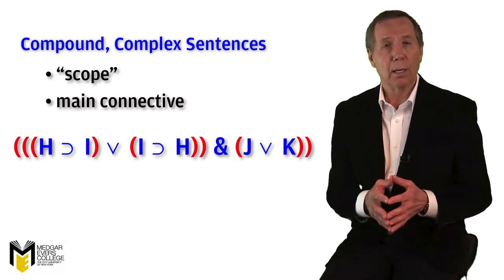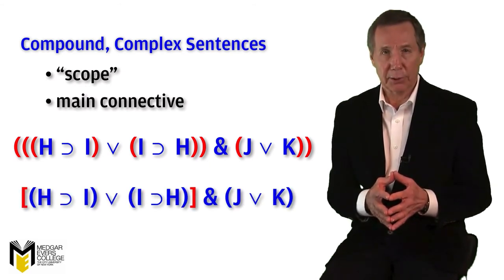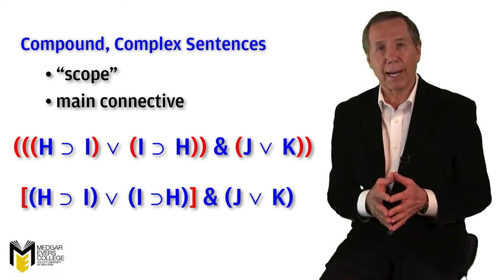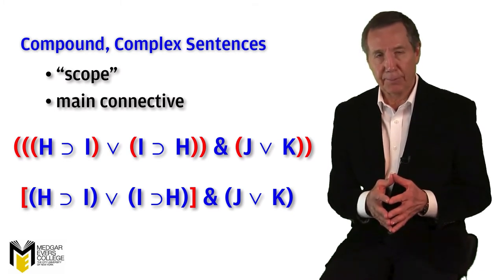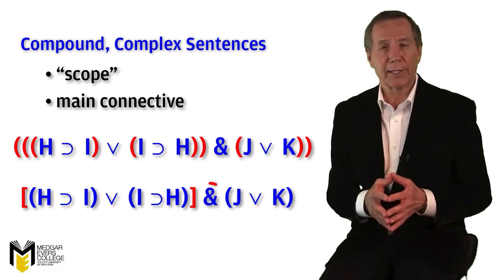we'll use this, which is much simpler and uses brackets to clarify things. This expression allows us to more quickly determine that the ampersand is the main connective.